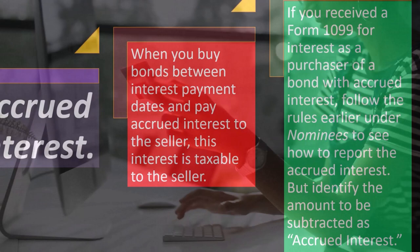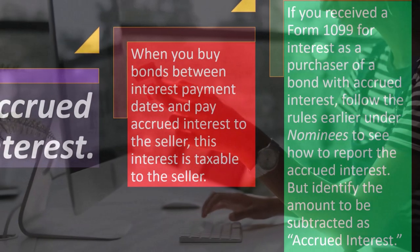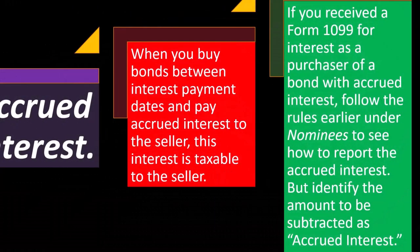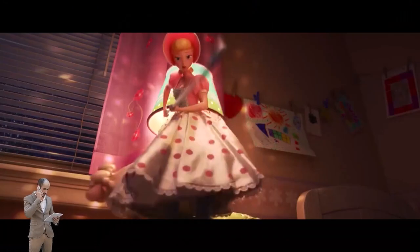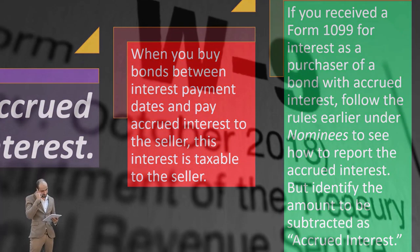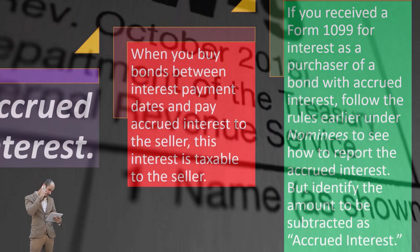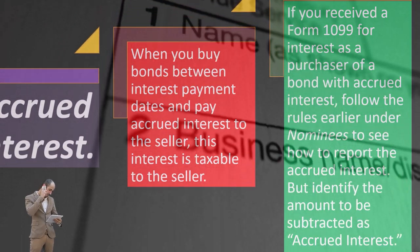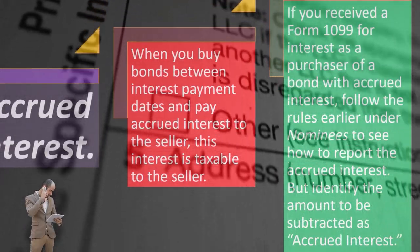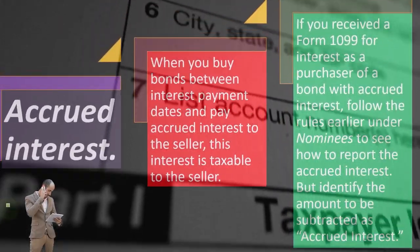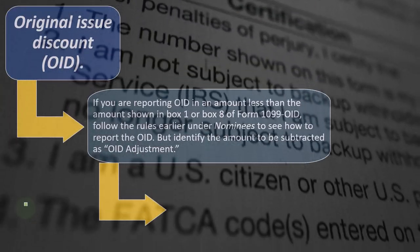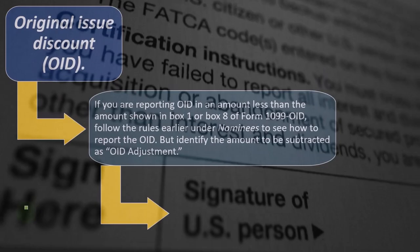Identify the amount to be subtracted as accrued interest. You might end up with a situation where the 1099 has to be adjusted. You have to tie in what's on the 1099 to what's on your forms, or you're going to have a problem. If you need to show something different, you'd want to show the detail of the change and the adjustment, explaining what's on the 1099 and why there's a change.